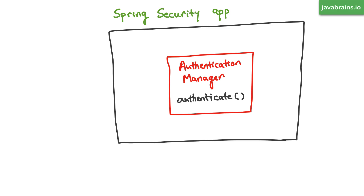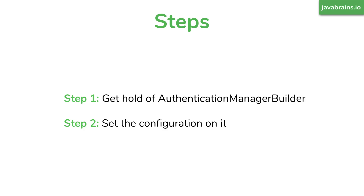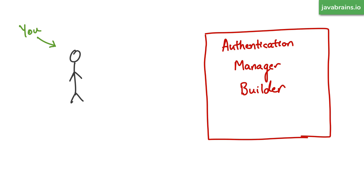The way to affect the authentication manager is not by creating your own, but instead to configure what it does using a builder pattern. You don't work with the authentication manager directly — instead you work with a builder class called AuthenticationManagerBuilder. You use AuthenticationManagerBuilder to configure what the authentication should actually do. There are two steps: first, get hold of this AuthenticationManagerBuilder; second, set the configuration on it.